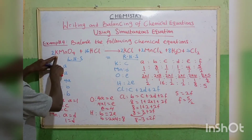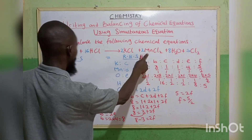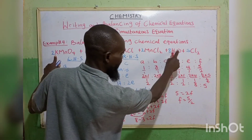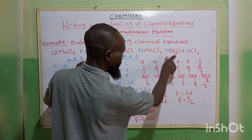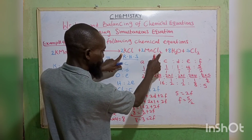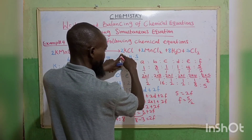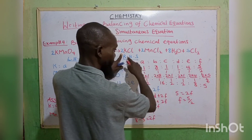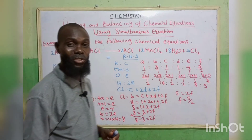Substituting back: potassium — 2 on the left, 2 on the right. Manganese — 2 on each side. Oxygen — 2 times 4 gives 8 on the left; 8 on the right. Hydrogen — 16 on the left; 8 times 2 gives 16 on the right. Chlorine — 16 on the left; 2 plus 4 gives 6, and 5 times 2 gives 10, so 6 plus 10 equals 16. Balanced. This is the simultaneous equation method — the best method when an equation proves difficult to balance by inspection.